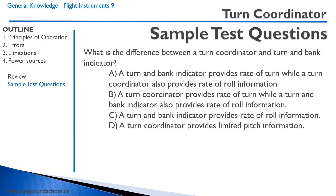Let's keep going. Answer B: a turn coordinator provides rate of turn while a turn and bank indicator also provides rate of roll — that's backwards, so that's not correct. Answer C: a turn and bank indicator provides rate of roll information — that's not correct. Answer D: a turn coordinator provides limited pitch information — that is not correct, as a turn coordinator does not provide any pitch information. So the correct answer is A.